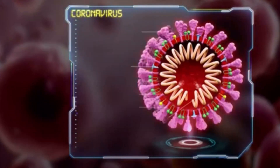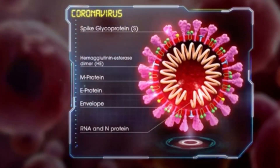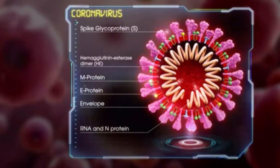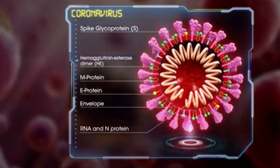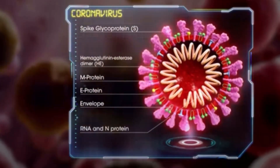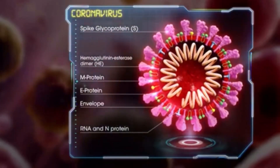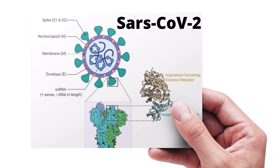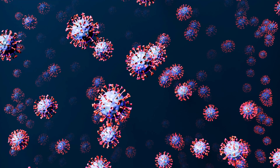The coronavirus has a positive-sense single-stranded RNA, which means it structurally resembles the messenger RNA found in eukaryotic cells. So it doesn't have to be transcribed from DNA into RNA — the viral RNA can be directly translated into the various enzymes and proteins the virus needs to make copies of itself. The RNA is contained within an envelope of a lipid bilayer.